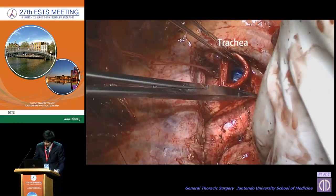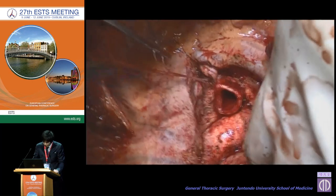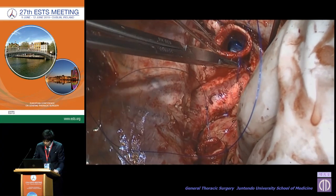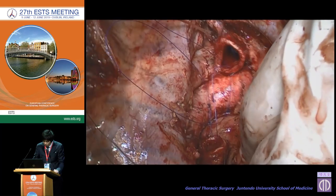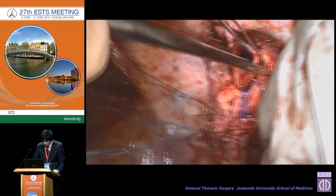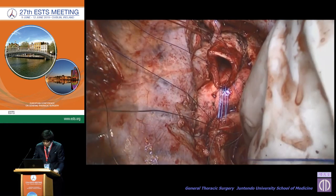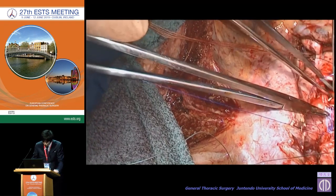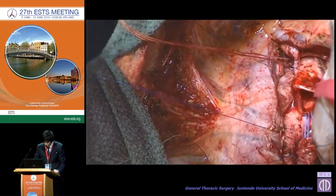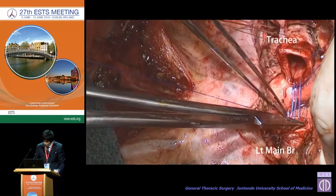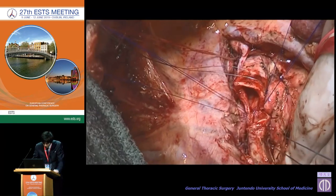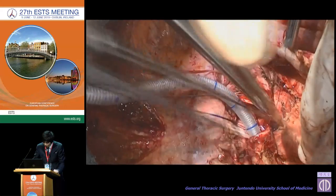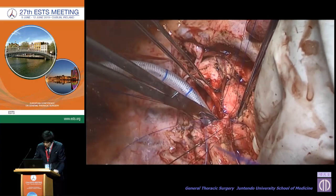Then we started anastomosis. Anastomosis between the deepest caudal side of trachea and left main bronchus was performed with continuous suture using 3-0 Prolene. Then interrupted sutures between the ventral side of trachea and left main bronchus were performed, as well as interrupted sutures on the dorsal side. We then directed the continuous suture so the suture lines were attached, and ligation was performed between the continuous suture and the interrupted sutures.